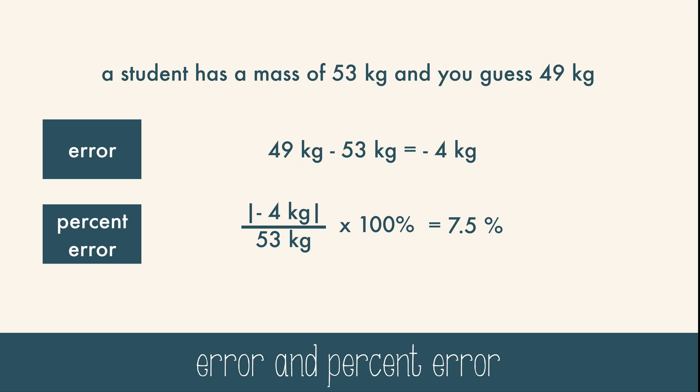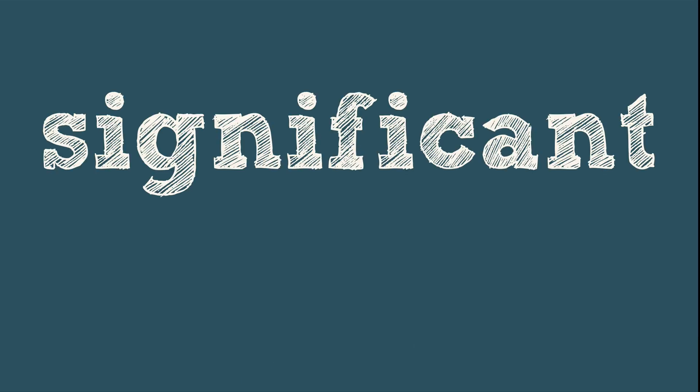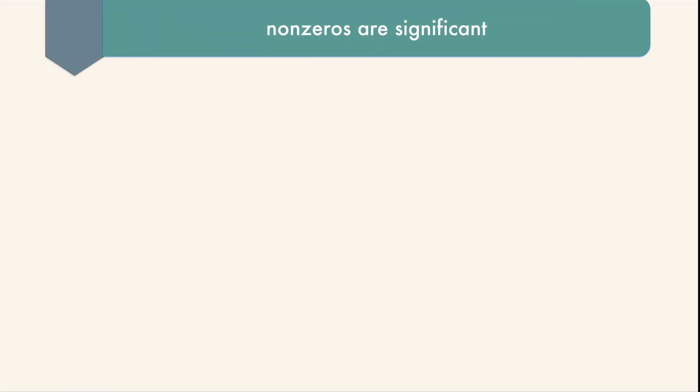Sometimes you need really precise measurements and a way to record them. That's why we use significant figures. Significant figures include all the digits that are known plus an estimate. There are some rules about figuring out significant figures, or sig figs for short. First, non-zeros are always significant - that's any number other than zero like 1, 2, 3, 4, 5 and so on.